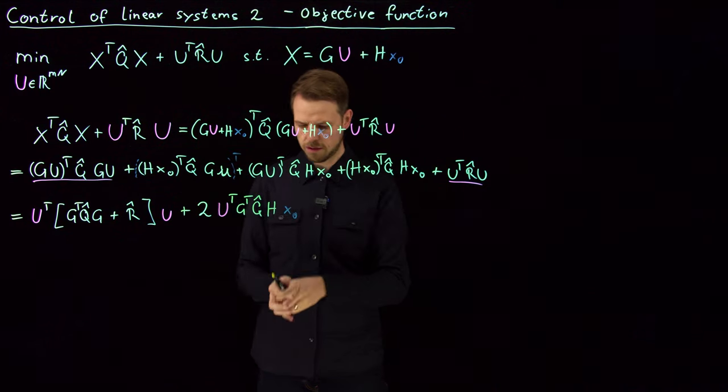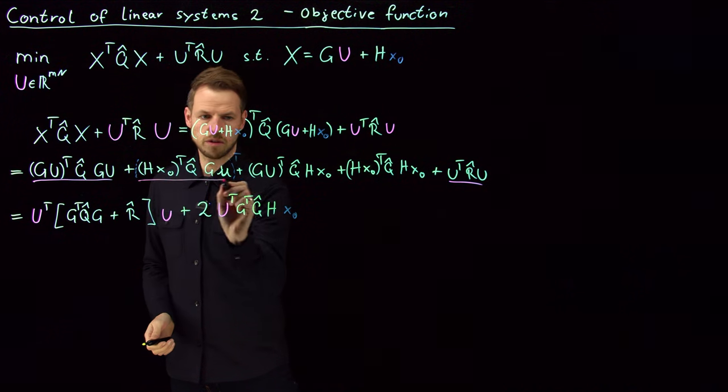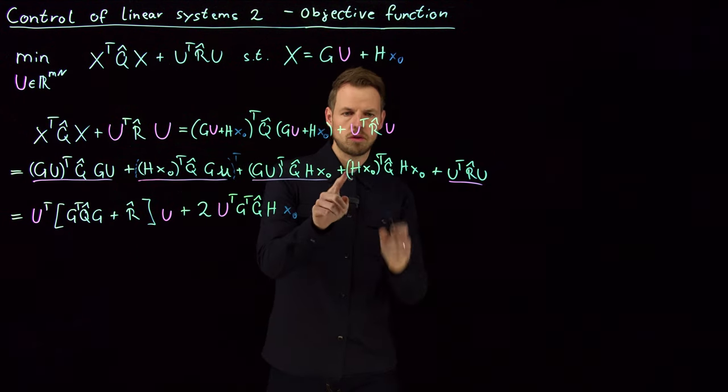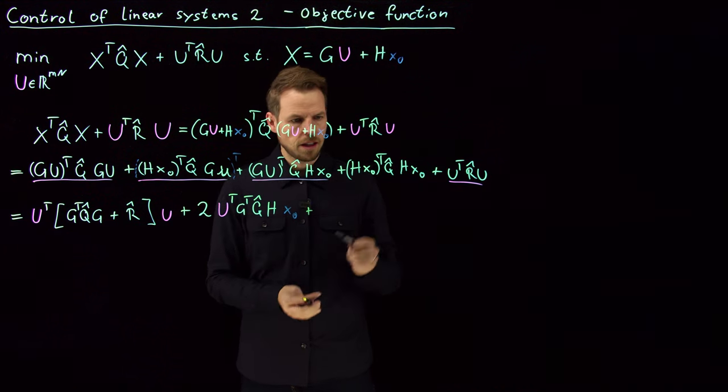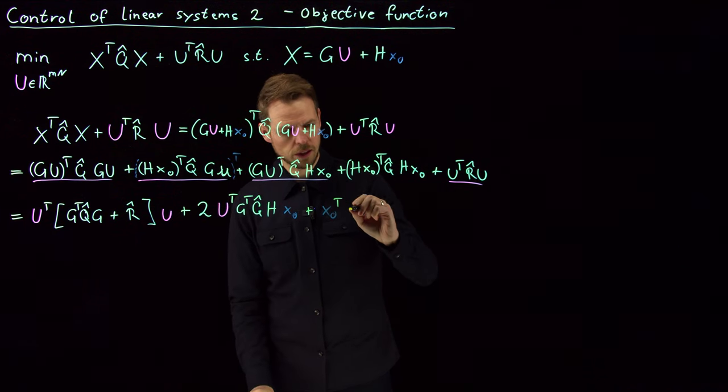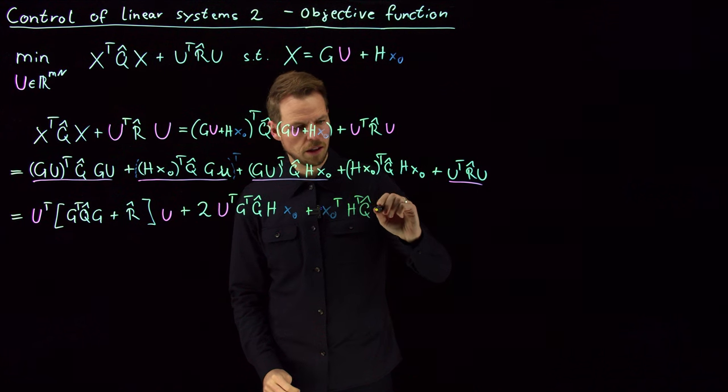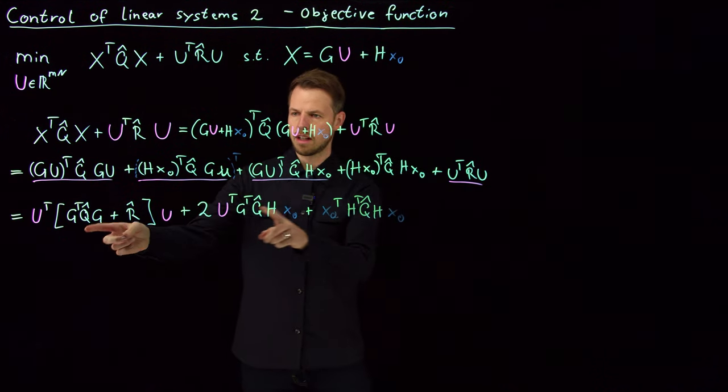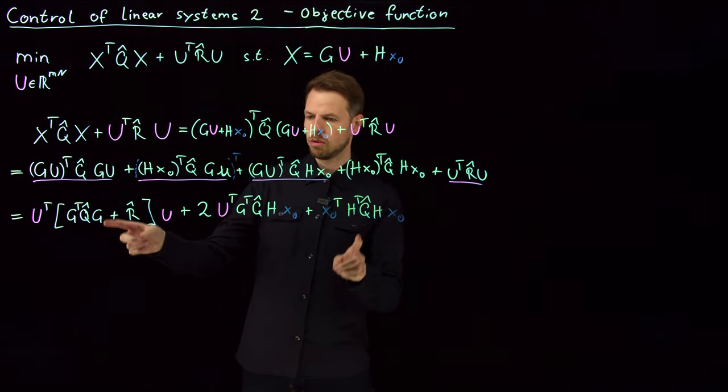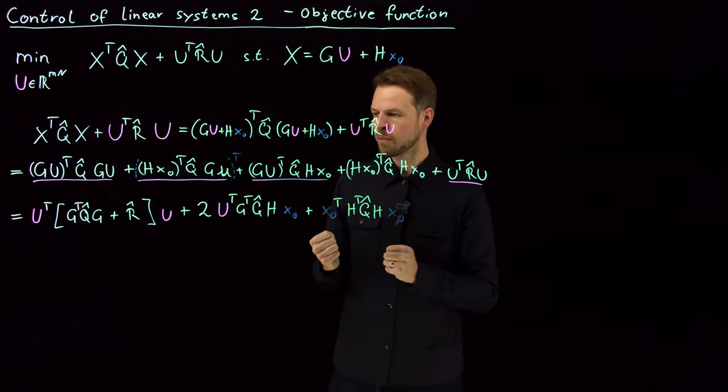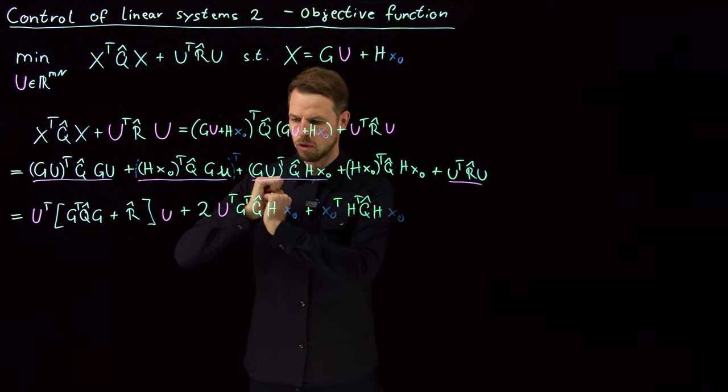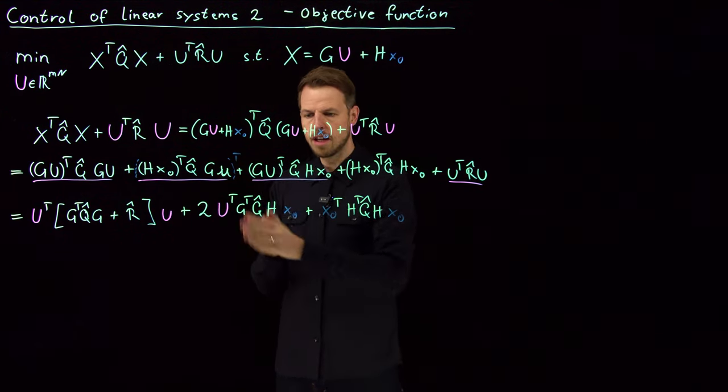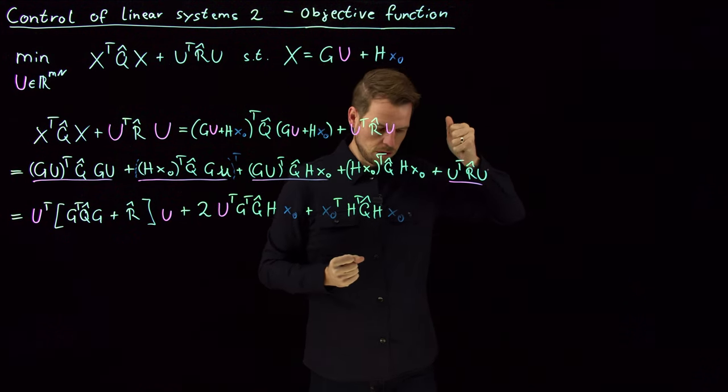So let's transform this one into this one. So what I get is two times, and I can also resolve this bracket. So what I get is U transposed times G transposed Q hat H times my parameter x0. So these two terms are summarized. We've gotten rid of this one and this one. So all that's left to be done is this one. And I can do the same trick here as well. So I'm transposing this, so what I get is plus x0 transposed times H transposed Q hat H times x0. So what you see now is I have very nicely transformed my original quadratic form into yet another quadratic form that is not dependent on the big X, well not explicitly, but on the initial condition and the control U.